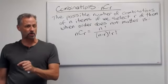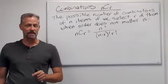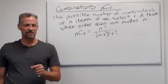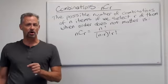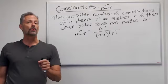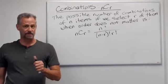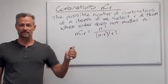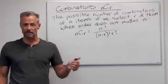So combinations NCR or N choose R, sometimes we say, the possible number of combinations of N items if we select R of them, when order does not matter, is N choose R is N factorial over N minus R factorial times R factorial.